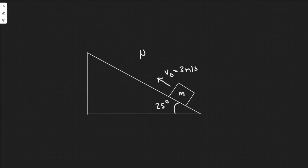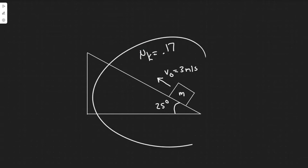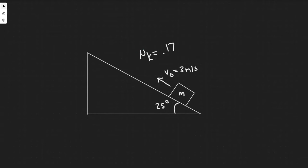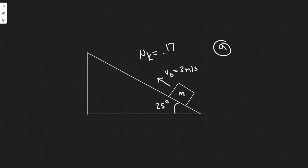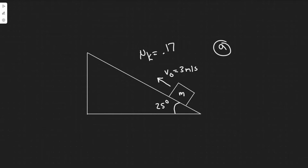The first thing to do is always understand what's going on and draw a picture. We have this crate on a 25-degree incline, pushed with a velocity of 3 meters per second. At some point, friction and gravity will push back against it and it's going to stop and reach some point. We're trying to find that distance.